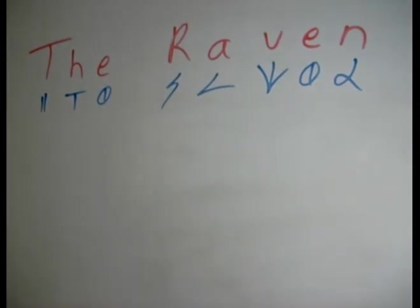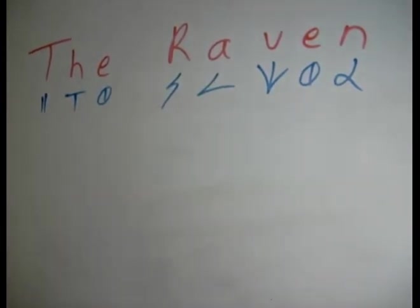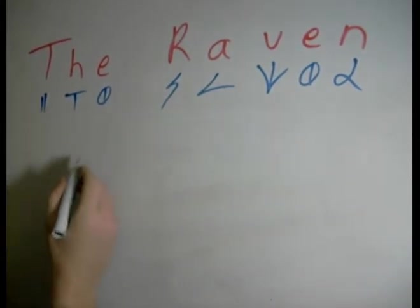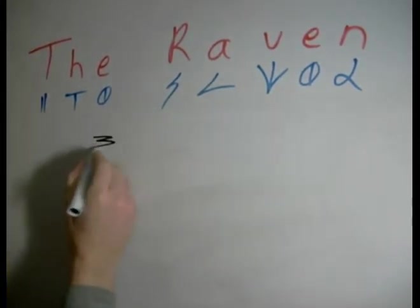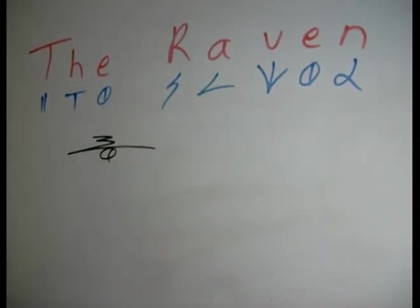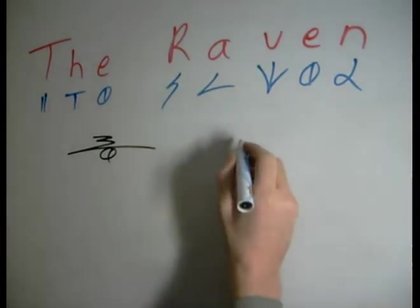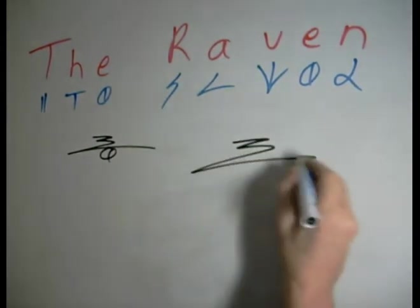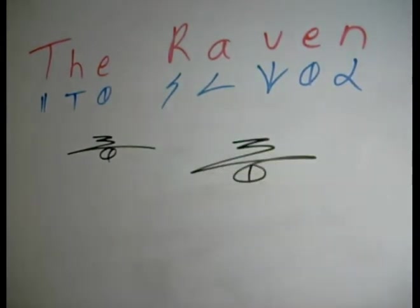Let's do the raven in D-script. Let's start with the word 'the' — this is a very, very common word, obviously we use it a whole bunch. The 'th' combination, as you should know by now, is this — the 'e' goes underneath. You can actually do this whole word without lifting the pen a single time. There you go. The.